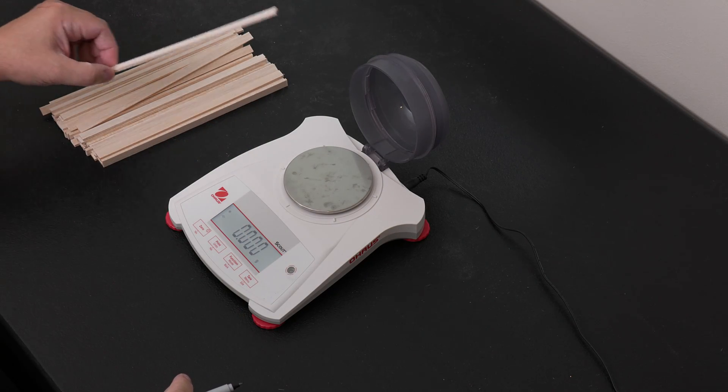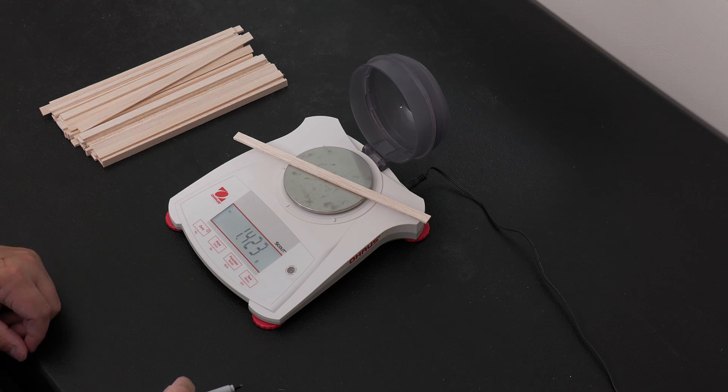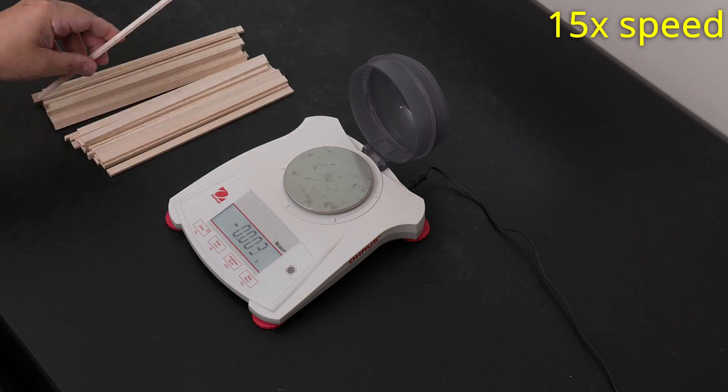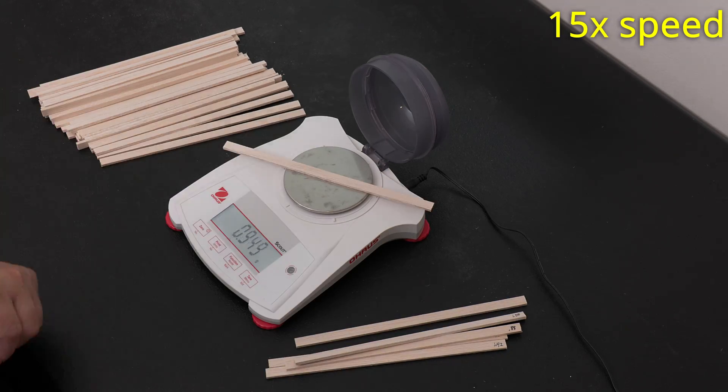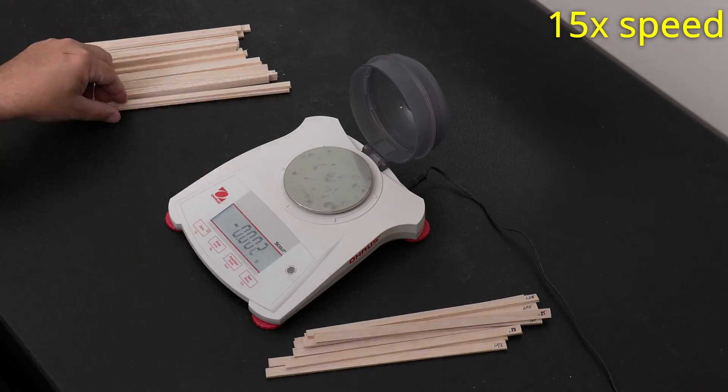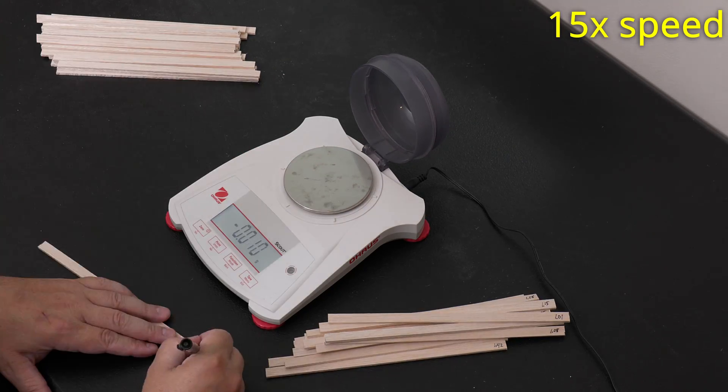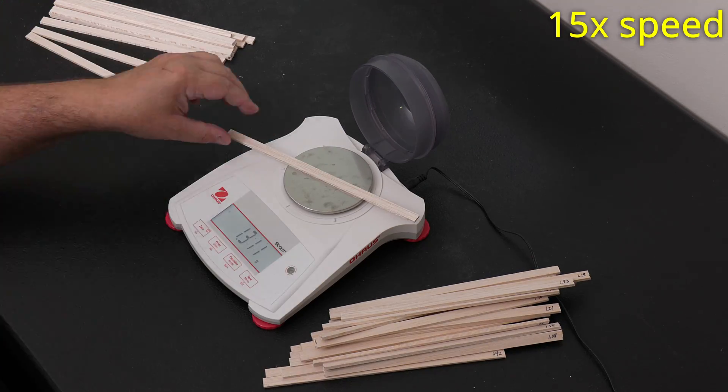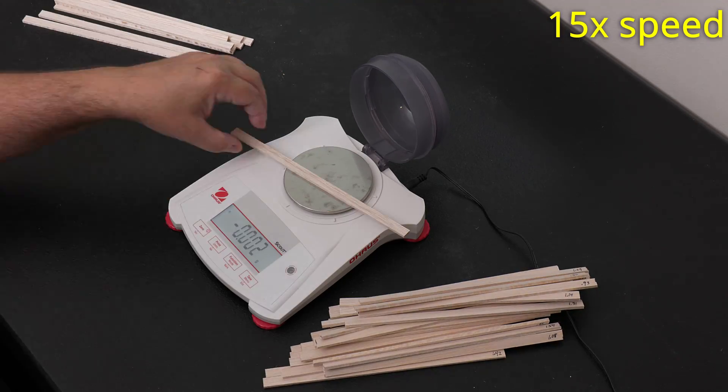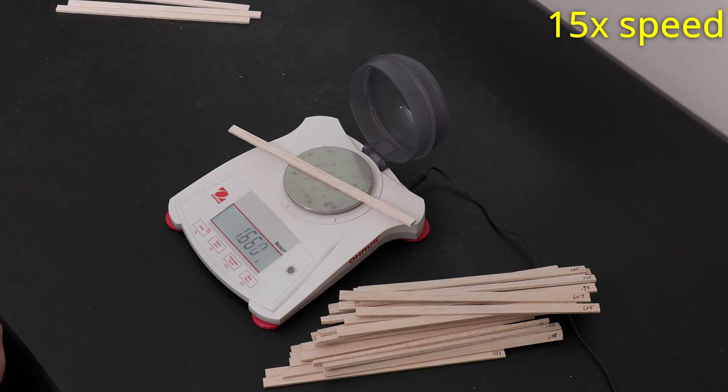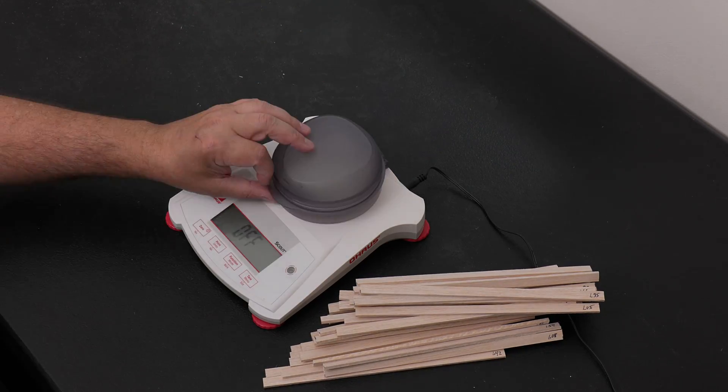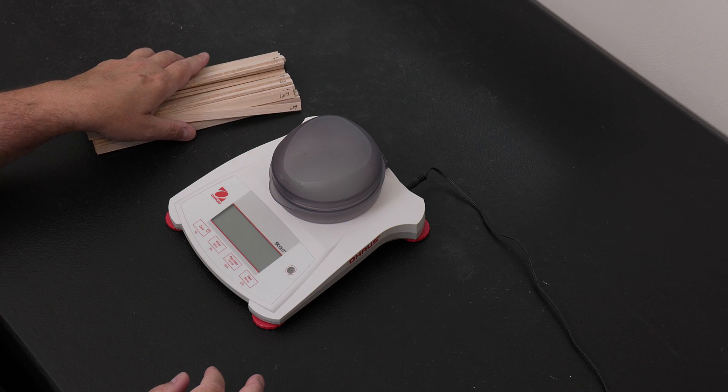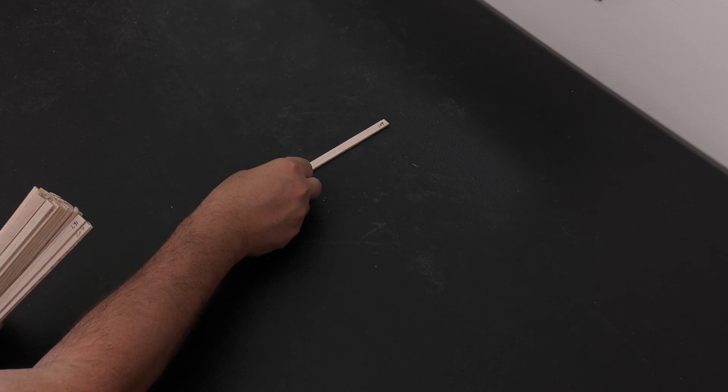Now I'll weigh every piece and record the mass on the stick itself using a fine point sharpie. Finally, I'll sort all 40 pieces by mass going from left to right.